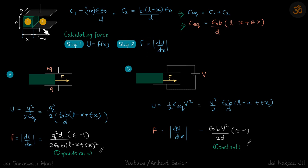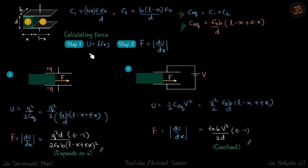The two regions act as two capacitors in parallel. For C1, where the dielectric is present, the capacitance is ε·ε₀·(b·x)/d. For C2, the empty region, it is ε₀·(b·(l − x))/d. Both capacitors are in parallel, so C_equivalent is found by adding them.